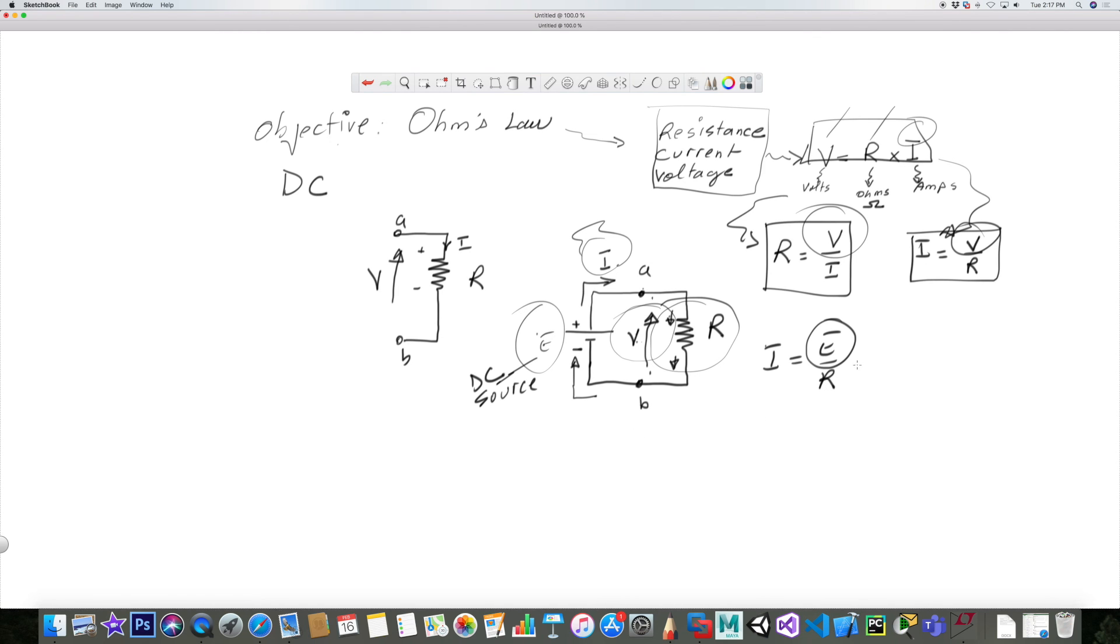Could we extract other things out of this? Let's say we knew what the current was and we knew what the resistance was, but we're not too sure what the voltage is. Then E equals R times I. This is the same as this formula here.